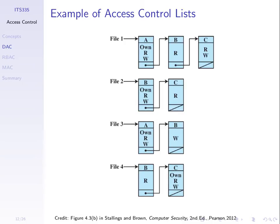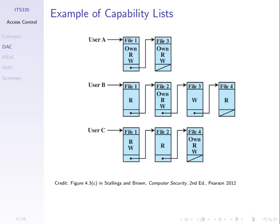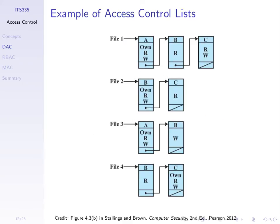If a user is not in the access control list, they get some default access rights—like zero access rights. So for file 4, user A cannot do anything because they're not in the access control list. That's a more efficient way to store access right information. The other way is per user: for each user, you specify what they can do on different objects. So user A can do things on files 1 and 3, user B on 1, 2, 3, 4, and so on. Different computer systems use these depending on the number of objects and subjects to control.